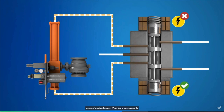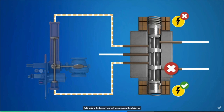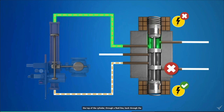When the lower solenoid is energized, the spool is pulled down and hydraulic fluid is supplied through the lower fluid line to the actuator. The fluid enters the base of the cylinder, pushing the piston up and opening the valve. At the same time, fluid is forced out of the top of the cylinder, through a fluid line, back through the pilot valve, out the upper vent port, and back to the hydraulic fluid supply reservoir.